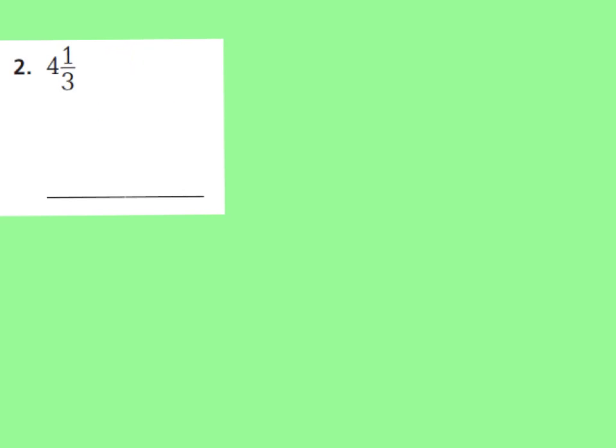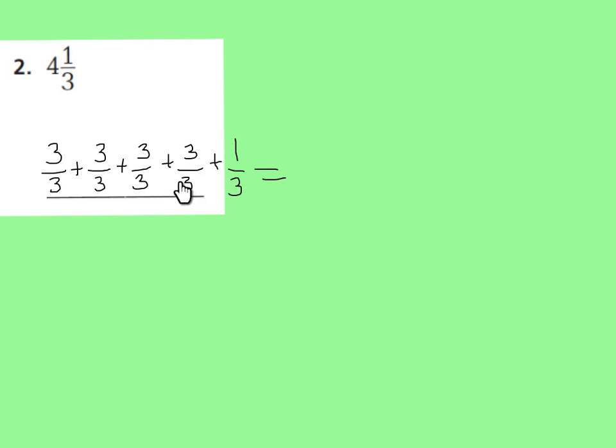Let's look at number 2. I have 4 and 1 third. I'm going to break my fraction apart to turn it into an improper fraction. I can see I have 4 wholes, and each one is going to be out of thirds. So I'll have 3 thirds, 4 times: 3 thirds plus 3 thirds plus 3 thirds plus 3 thirds. That is 3, 6, 9, 12. Then I have my 1 third. So 12 plus 1 is 13, giving me 13 thirds.